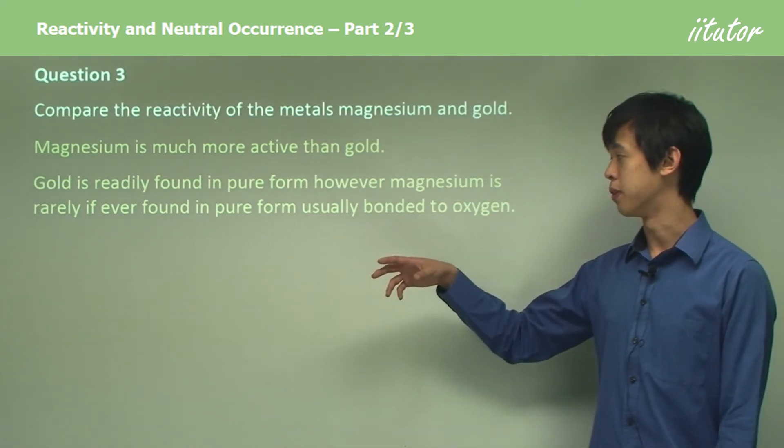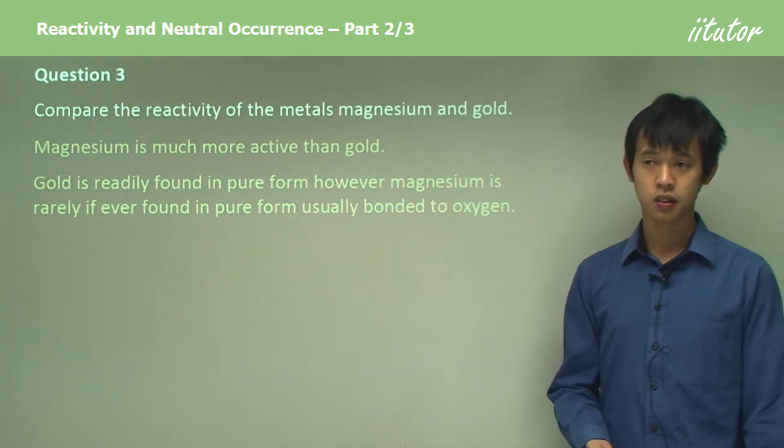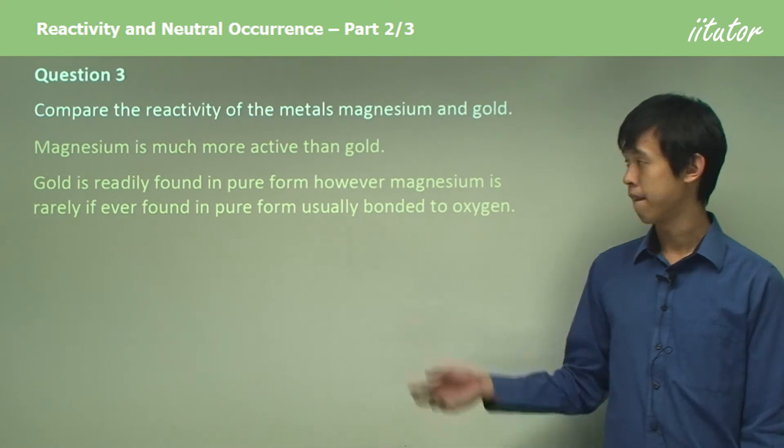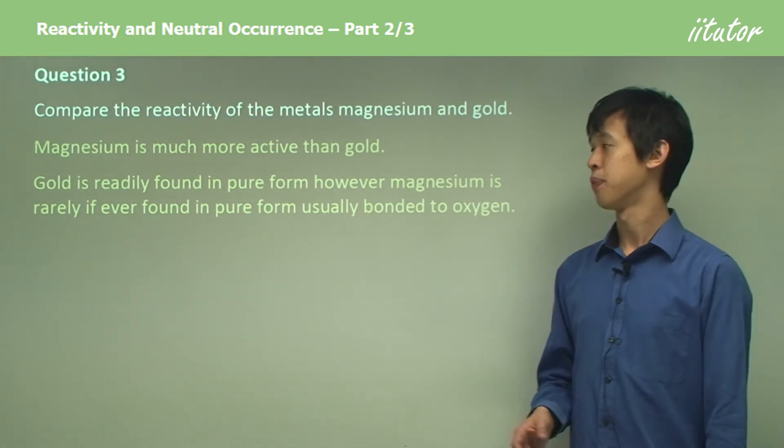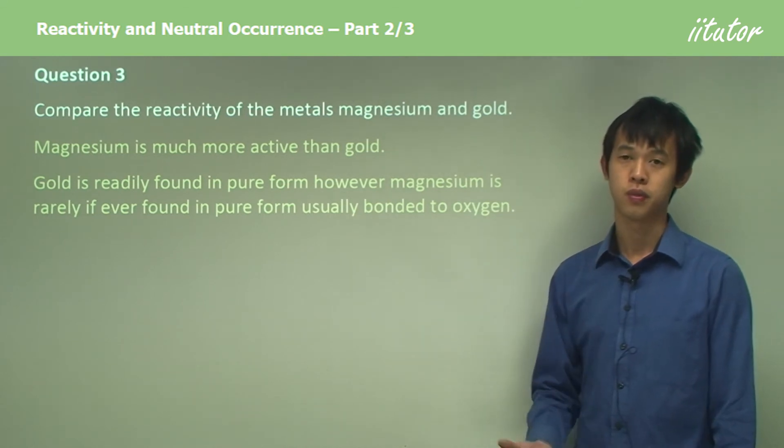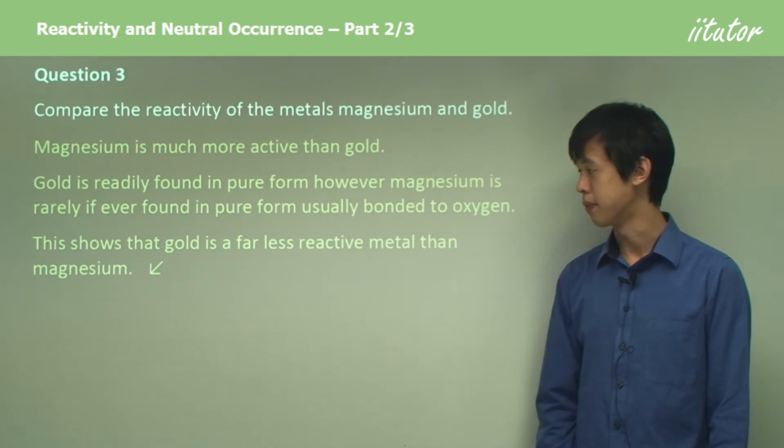Usually it's bonded to oxygen, but it could be bonded to other things as well. We never find it, or if we do find it, it's very rare in pure form in the earth's crust. This shows us that gold is a far less reactive metal than magnesium.